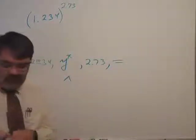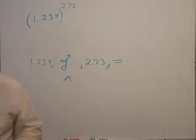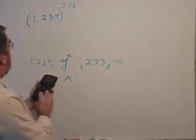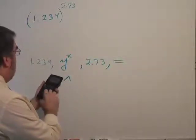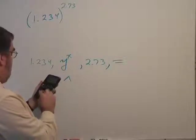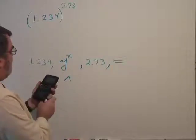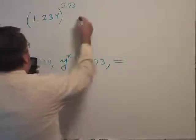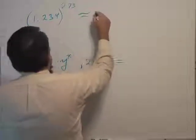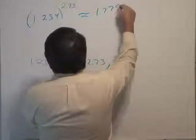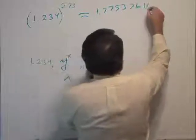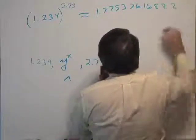Hit equal. So let's see what we get here. Alright, 1.234 raised to the 2.73 is, now I get approximately 1.77537616882.